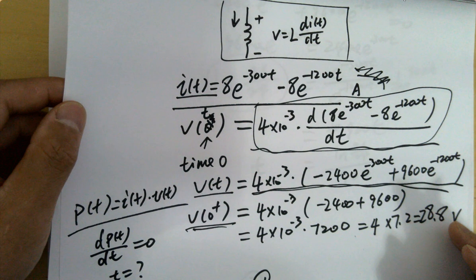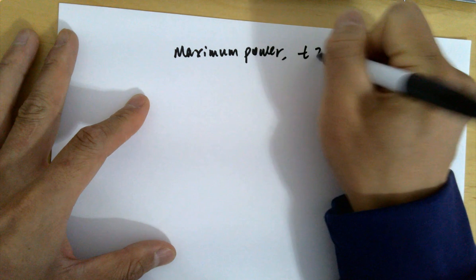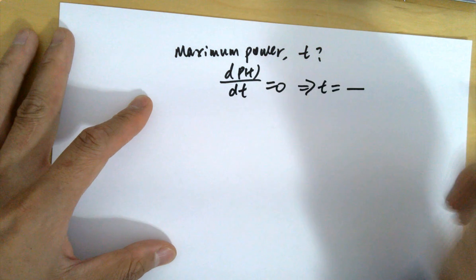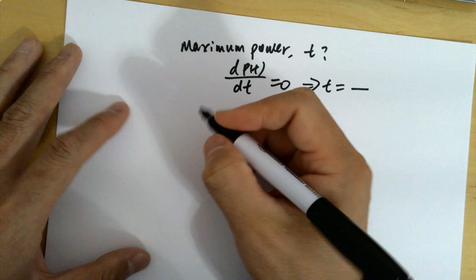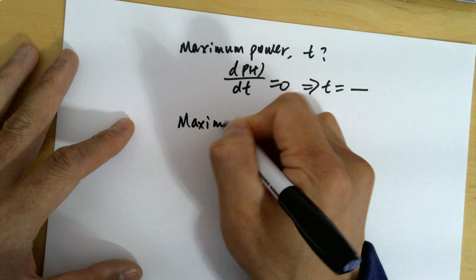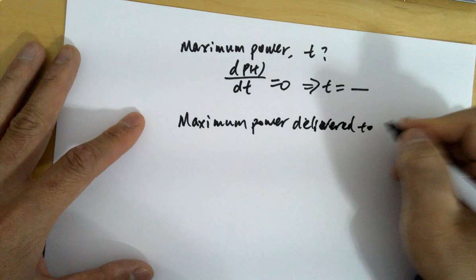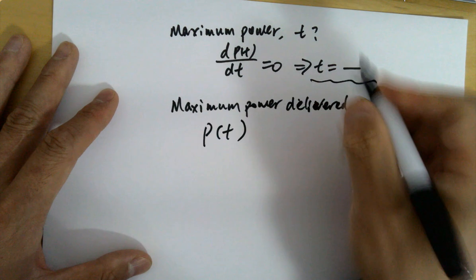To find the maximum power delivered to the inductor, first find t by setting dp(t)/dt = 0. Once t is calculated, plug it back into p(t) to get the maximum power value. It's two steps: find the critical time, then evaluate p(t) at that time.